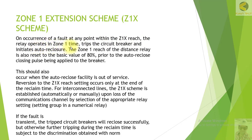The relay operates in Zone 1 time, trips the circuit breaker, and initiates auto-reclose. The Zone 1 reach of the distance relay is also reset to the basic value of 80% prior to the auto-reclose closing pulse being applied to the breaker. So Zone 1 is always extended in normal healthy condition to 120%. When the relay trips and the auto-reclose functions, it sends a pulse to the relay resetting Z1X from 120% back to 80%. If the fault persists, the relay will work as a normal graded zone scheme in the second attempt.